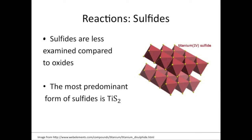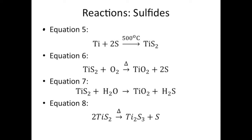Titanium 2 oxide forms a trigonal prismatic array at 3000 degrees Celsius. Sulfides are less examined compared to oxides. The most predominant form of sulfides is titanium disulfide. Titanium disulfide forms by reacting titanium metal with sulfur at 500 degrees Celsius. Titanium disulfide reacts with oxygen upon heating to form titanium dioxide and sulfur. Titanium disulfide also reacts with water to form titanium dioxide and hydrogen sulfide.